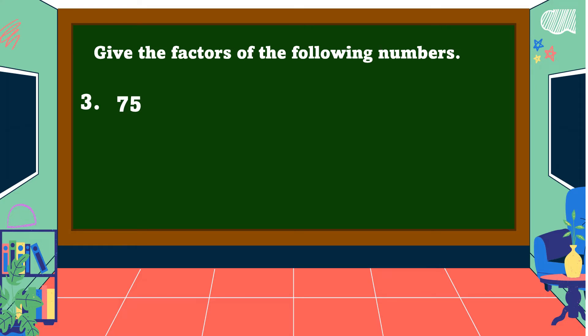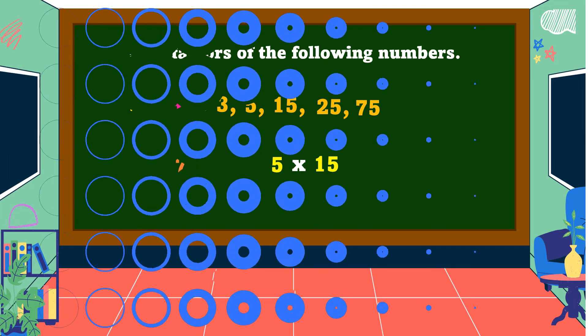Another example: 75. So the factors of 75, we have... okay, let's arrange the numbers. All right, the factors of 75 are 1, 3, 5, 15, 25, and 75. Let's have a short exercise.